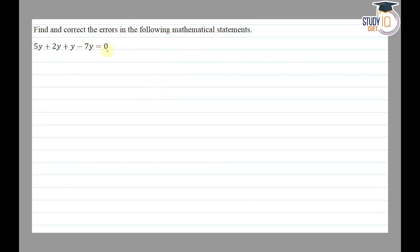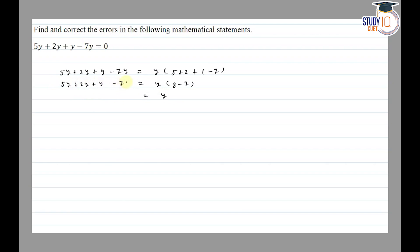So 5y + 2y + y − 7y. Taking y as common: y(5 + 2 + 1 − 7) = y(8 − 7) = y × 1 = y. The given statement says the answer equals 0, but the correct answer is y.